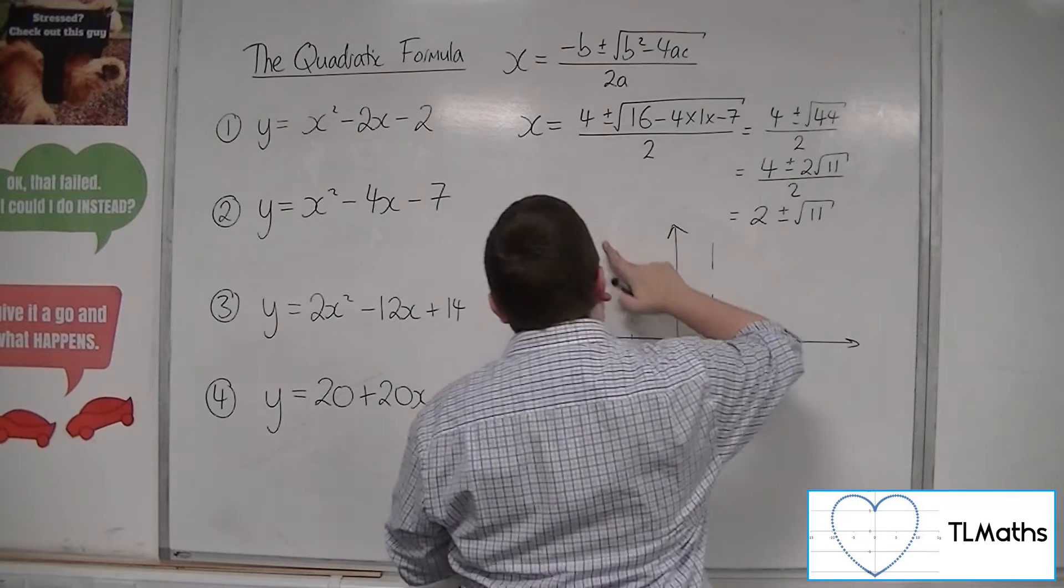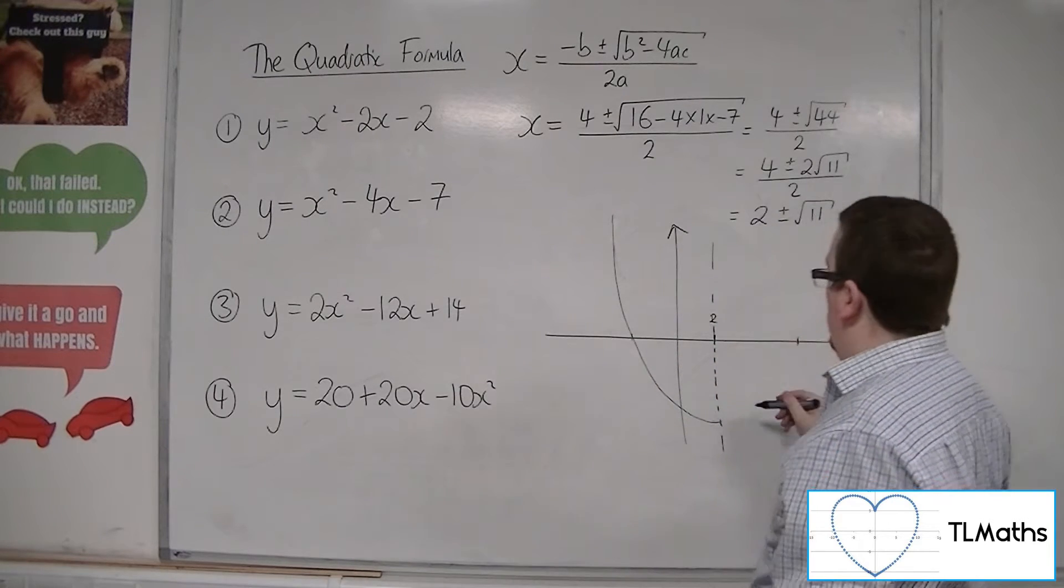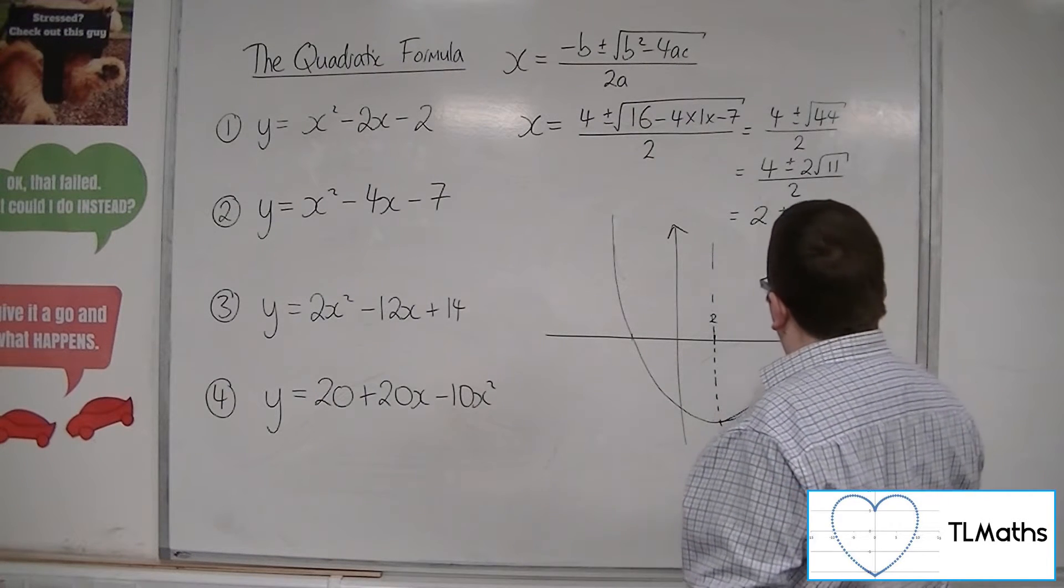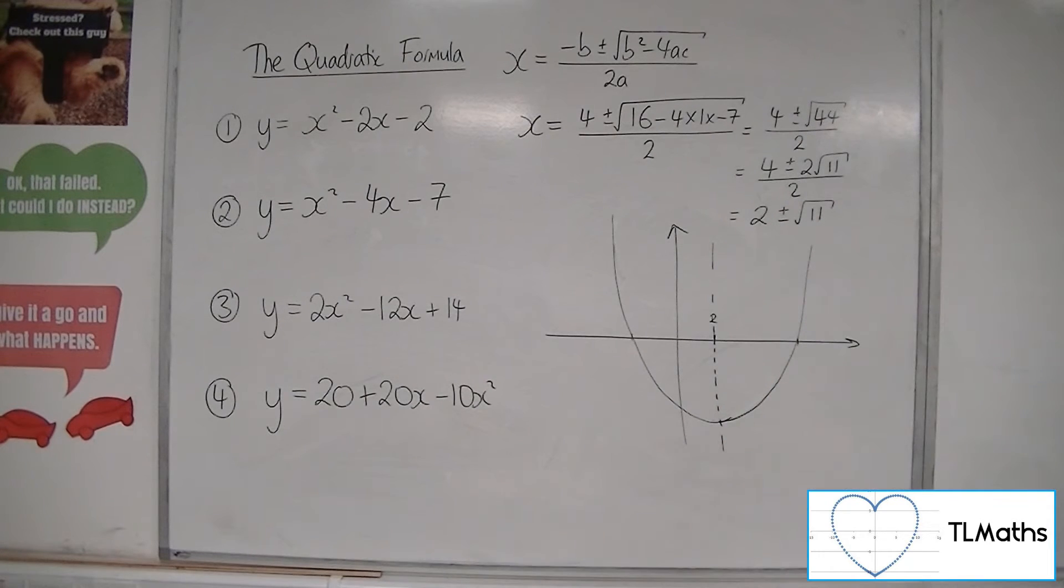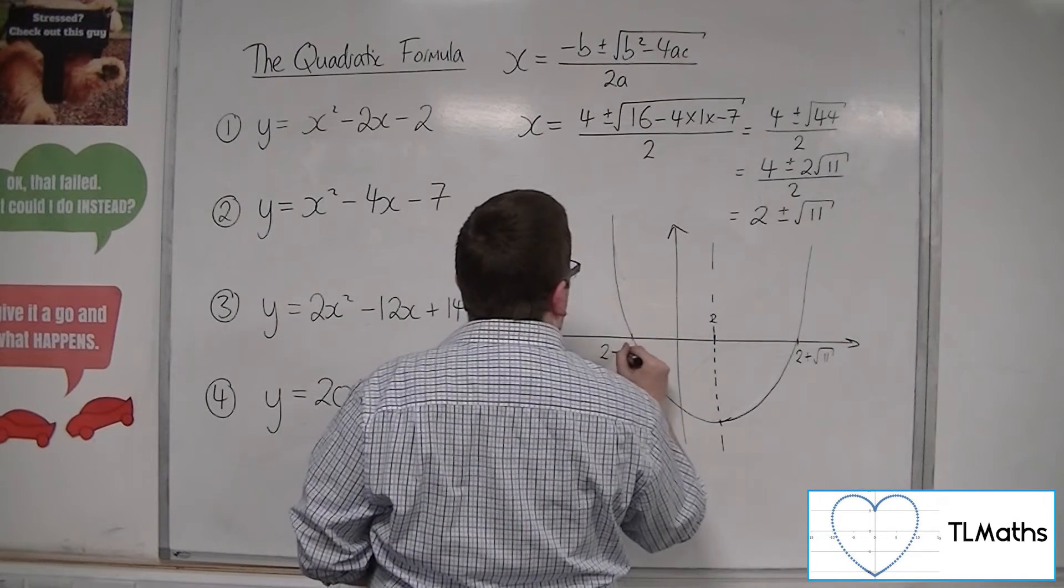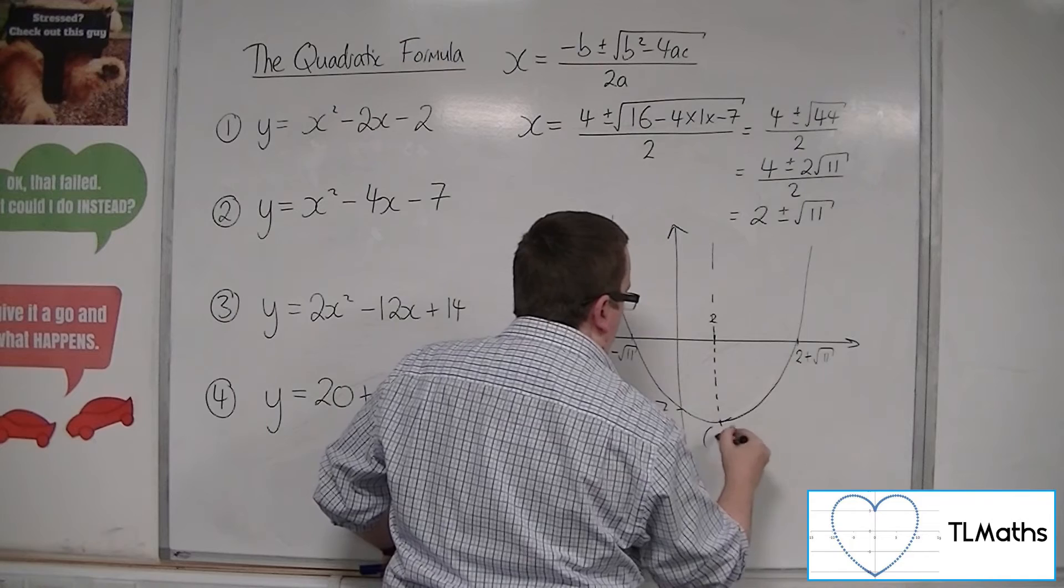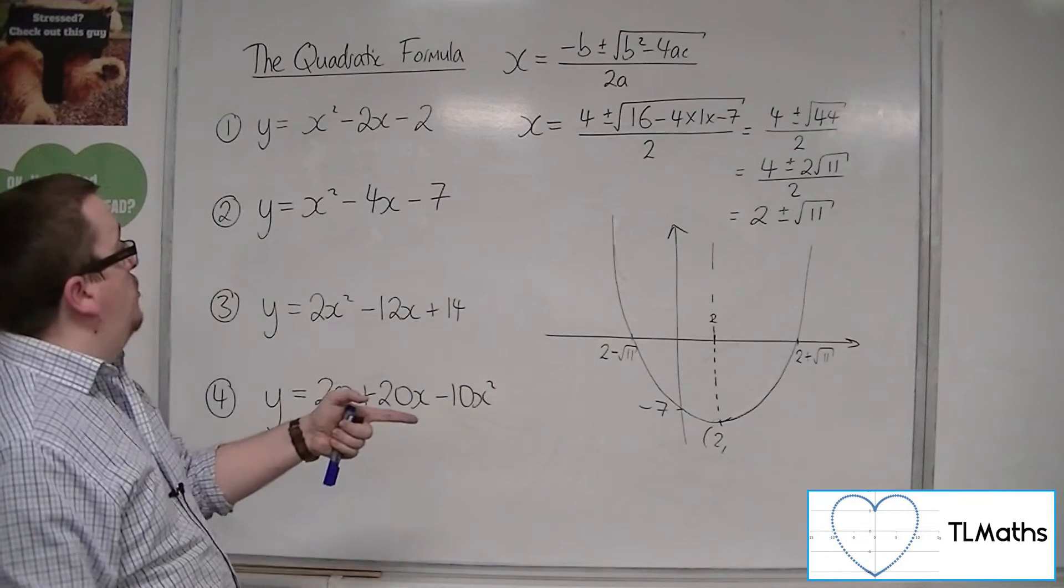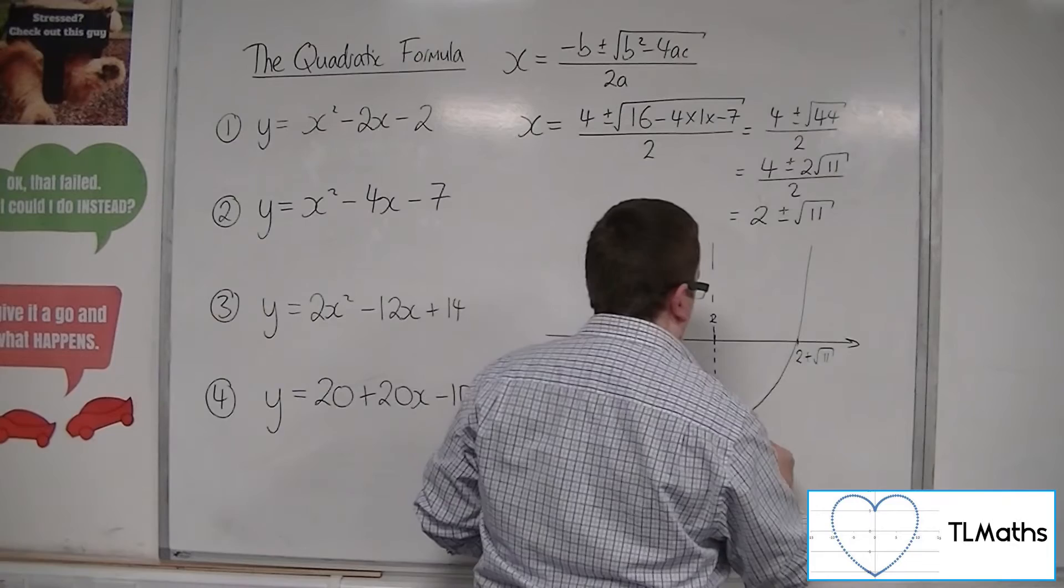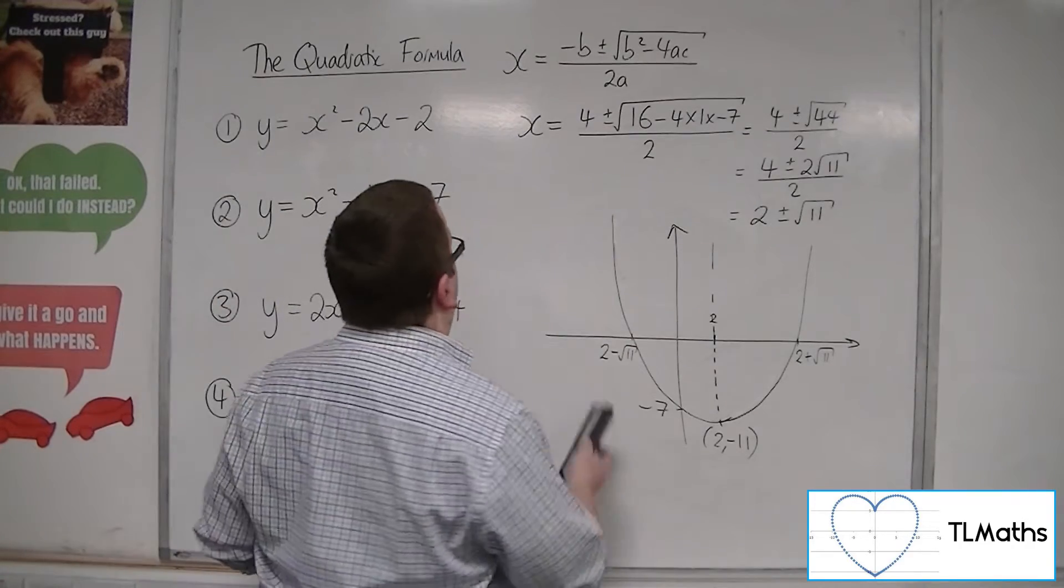So that wasn't particularly good. Let's have another go. Vertex. Not particularly good there. Let's have another go. That's what's good about having a whiteboard. Going to erase the mistakes. So that's my 2 plus root 11. This is my 2 minus root 11. This is my minus 7. And, of course, I can work out the coordinates of that vertex because it's at 2. So 4 take away 8 to minus 4. Take away 7 to minus 11. So 2 minus 11 must be the coordinates of the vertex. OK, so that's that parabola.